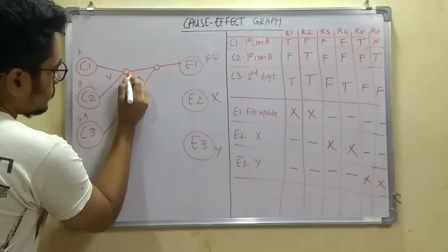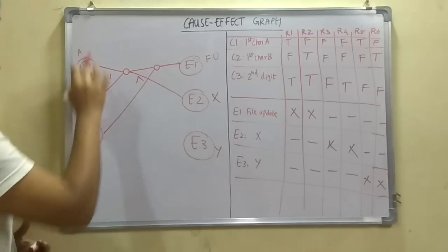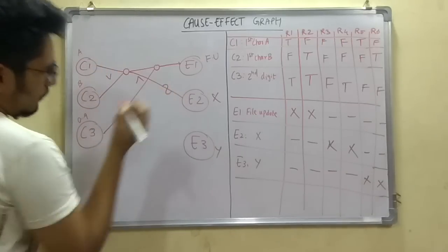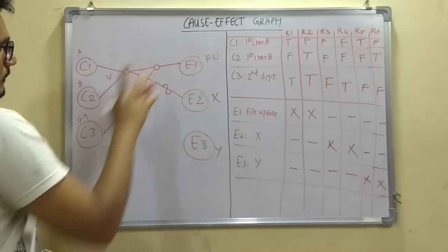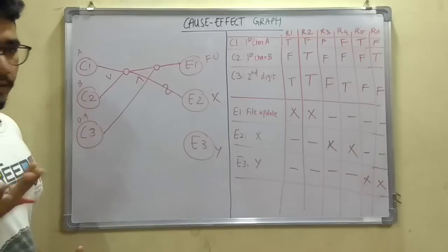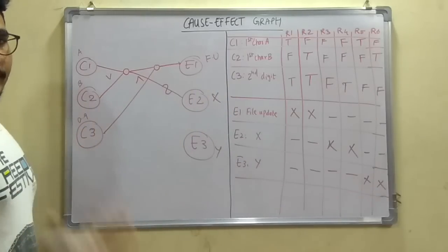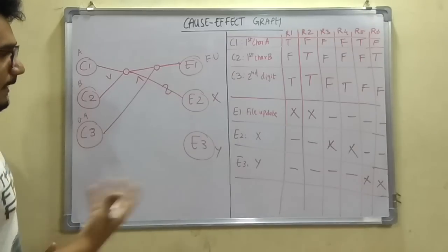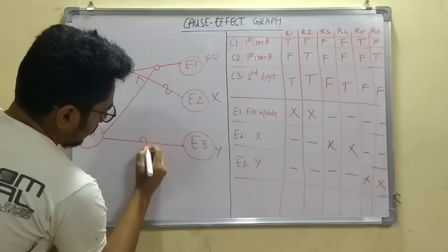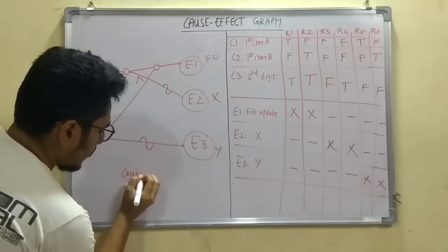If neither C1 nor C2 is true — i.e., the first character is not 'a' or 'b' — we connect directly to E2 (message X) using a NOT operator. Similarly, if C3 is false — the second input is not a digit — it connects to E3 (message Y) using a NOT sign. These logical operators — OR, AND, NOT — are used to denote the cause-effect graph.